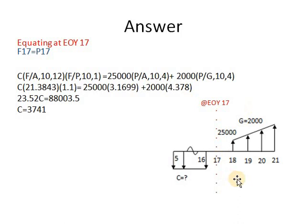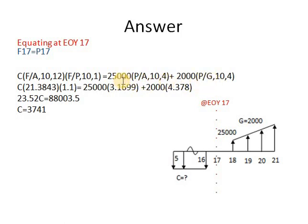On the withdrawals side, when getting the present of an arithmetic gradient, split it into two parts: the annuity part of $25,000, and the gradient part. Since the gradient increases by $2,000, get the present worth separately. P equals A into P/A at i and N. The period is 21 minus 17, giving 4 periods.